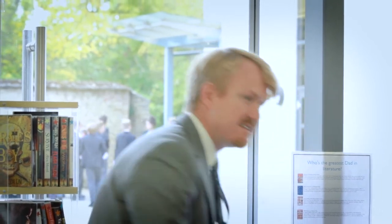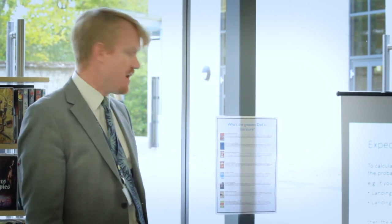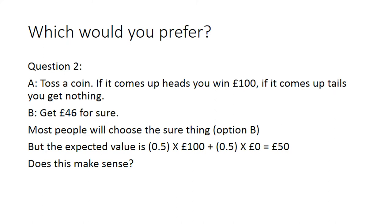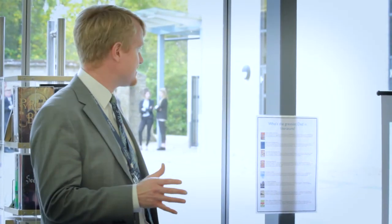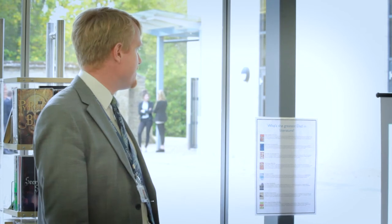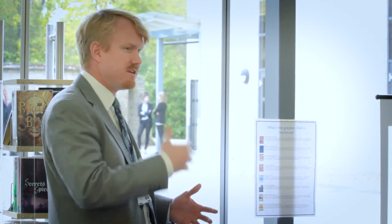Another way of thinking about this: if you did the same game 100 times, half the time you win a pound, half the time you win nothing, so the average payoff is 50p. Now, I've mixed all these questions up so you'd have no idea they went together. If you toss a coin and it comes up heads you win 100 pounds; tails you get nothing — that's option A. Or option B: you get 46 pounds for sure. Most people decided to go for the sure thing, option B, even though the expected value is 50 pounds — we'd still take the 46 because it's certain.